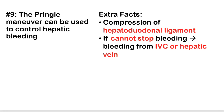Fact 9: The Pringle maneuver can be used to control hepatic bleeding. The hepatic artery and portal vein both run through the hepatoduodenal ligament. In liver trauma or laceration with concern for hemorrhage, you can control blood flow to the liver by pinching that ligament. If the liver is still bleeding profusely after the Pringle maneuver, the blood must be coming from the venous side — retrograde from the IVC or hepatic veins.